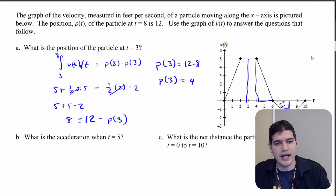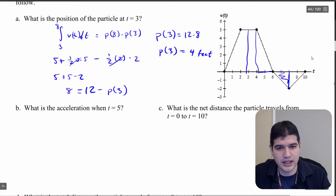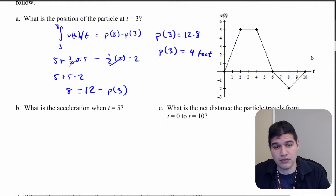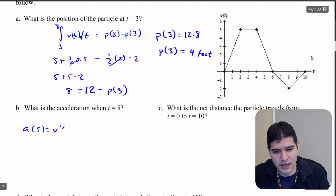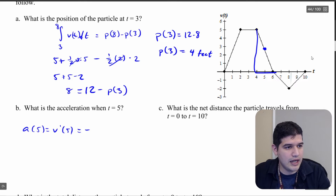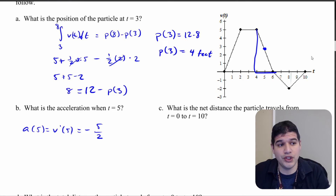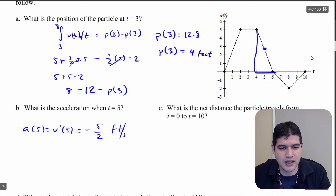Since velocity is measured in feet per second, the position is 4 feet. Now part b asks for the acceleration when t equals 5. Since I'm given velocity, I need a derivative, not an integral. So a(5) equals v prime of 5. At t equals 5 the function is on a line, so I just calculate the slope: it's going down by a height of 5 over a run of 2, so the slope is negative 5/2. The acceleration at t equals 5 is negative 5/2 feet per second squared.